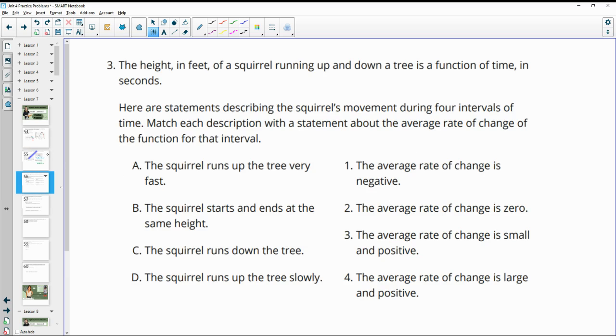Number three, the height in feet of a squirrel running up and down a tree is a function of time in seconds. Here are statements describing the squirrel's movement during four intervals of time. Match each description with a statement about the average rate of change for the function for that interval. So we're looking for a rate of change that's negative, a rate of change that's zero, a rate of change that is small but positive, or a rate of change that's large but positive. Small and positive are both going to be going up, but the small positive is going to be less steep. It's going to be flatter than the one that's large and positive.